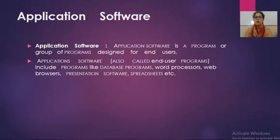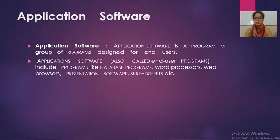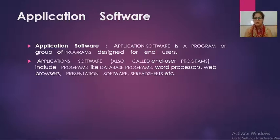We use application software to make our tasks easy and to simplify things. Every organization nowadays is making use of application software. For example, the Xenox app is used to update the records of students — this is again a real life example of application software. Different application software are also known as end user programs. Programs like database programs, word processors, browsers, MS Word, presentations, and spreadsheets — all are examples of application software.